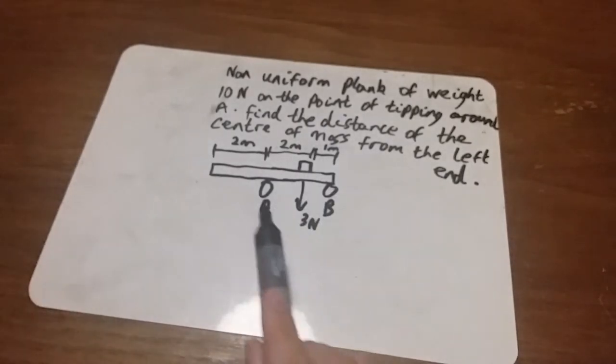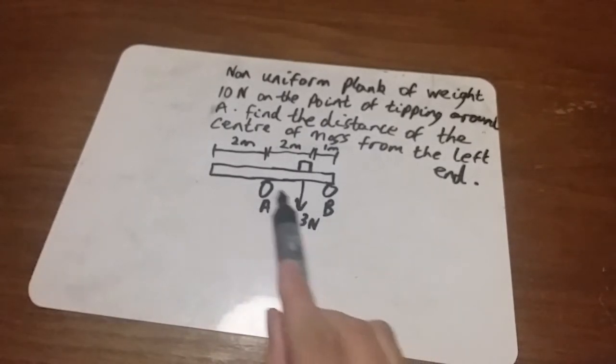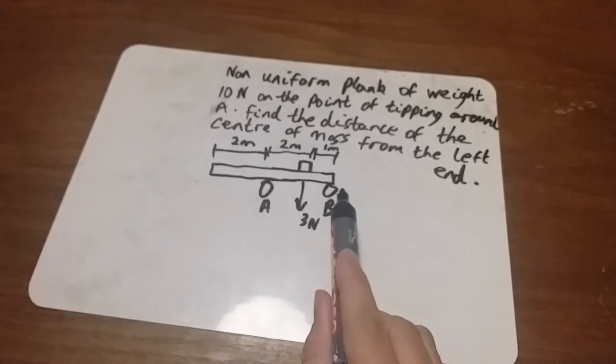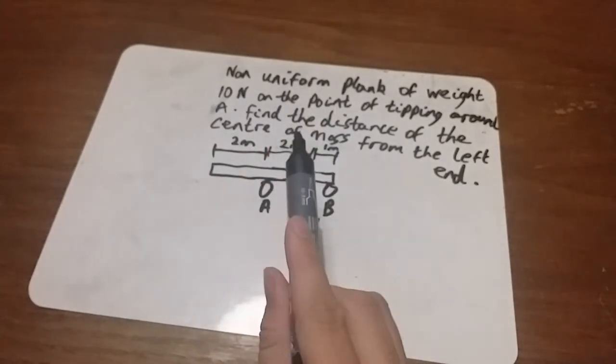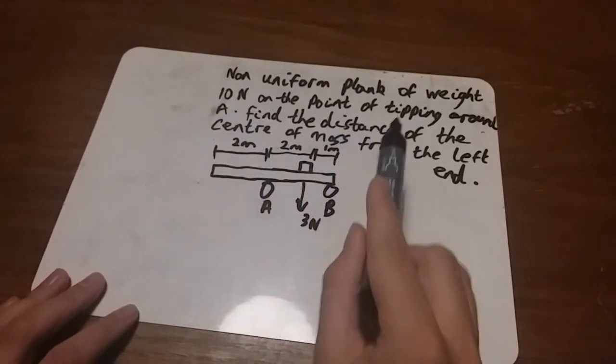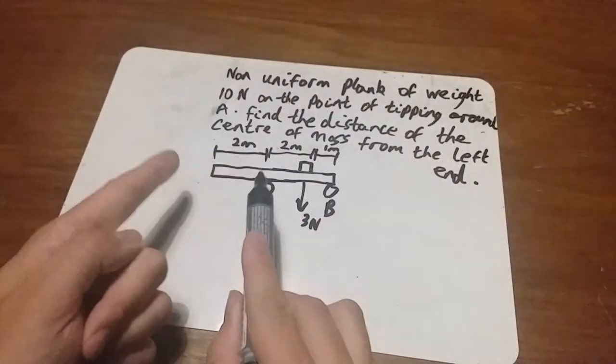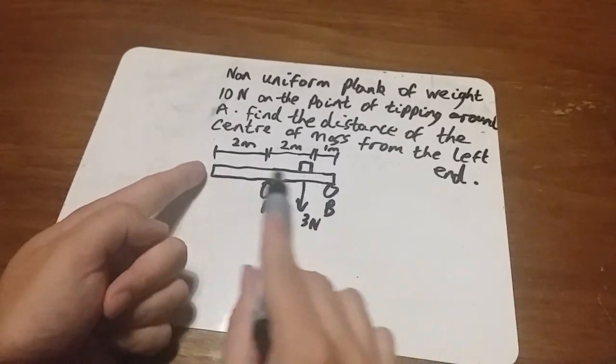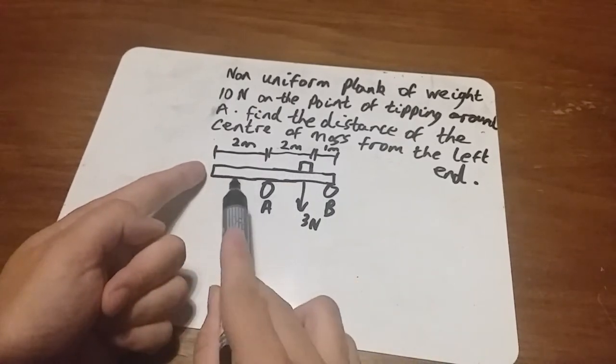We've got a plank here on two things holding it up, point A and point B. It's a non-uniform plank in this case, and the goal is to work out where the center of mass is from the left-hand side. It's going to be somewhere in this region here.